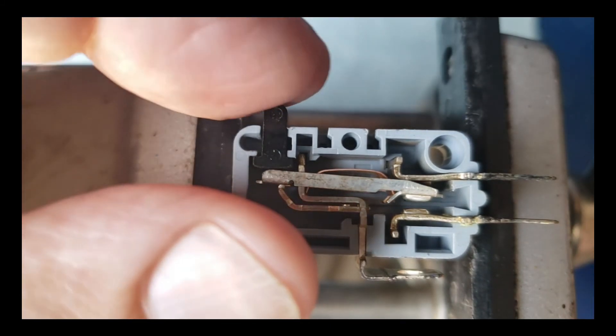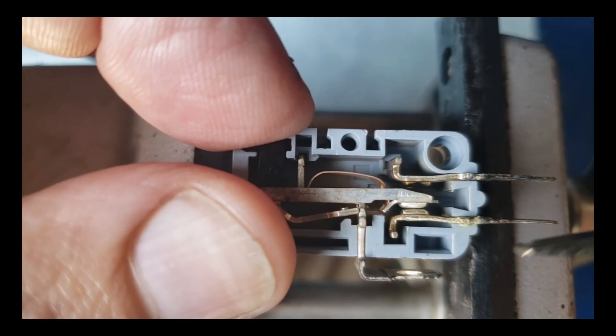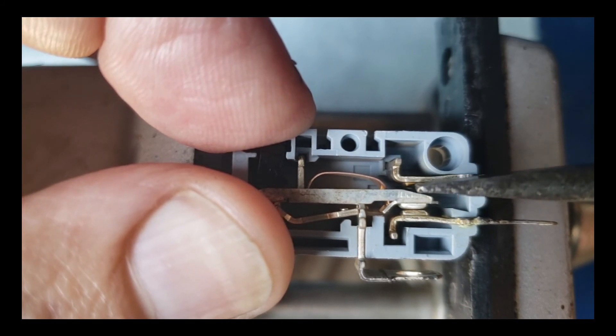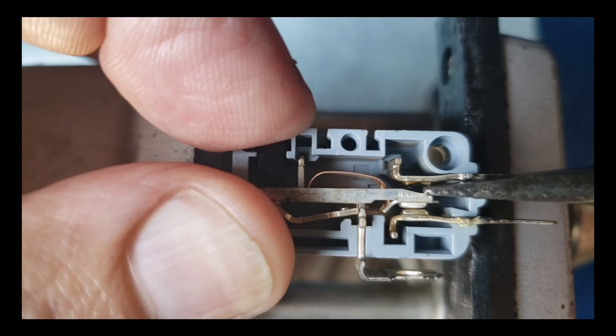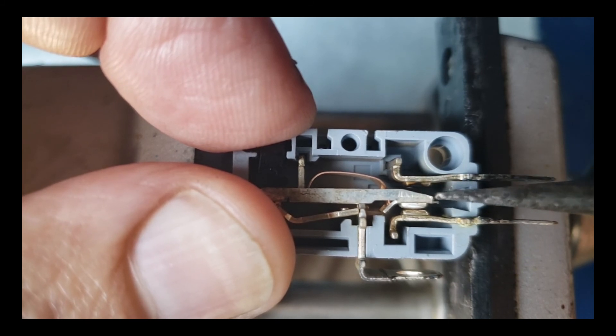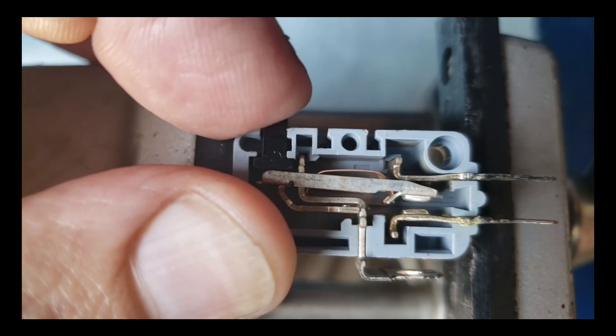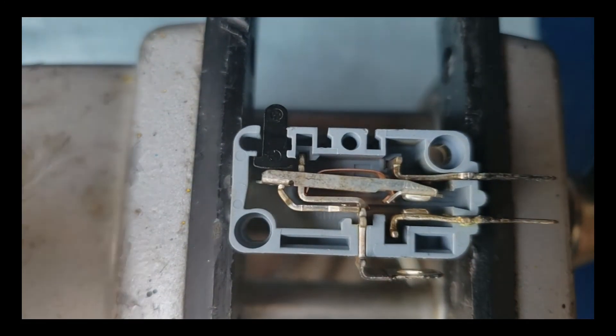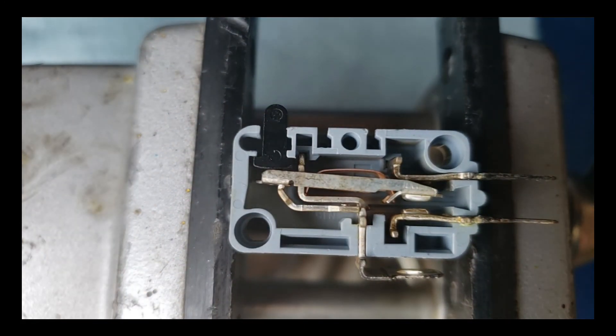And what happens to these a lot of times is the contacts in here will eventually get carboned up. And if you have one that you can actually snap apart like this, you can get in there with a little file or a piece of sandpaper, and you can polish that carbon back off there and clean those contacts up and make the switch start working again, if you don't have another microswitch to replace it.